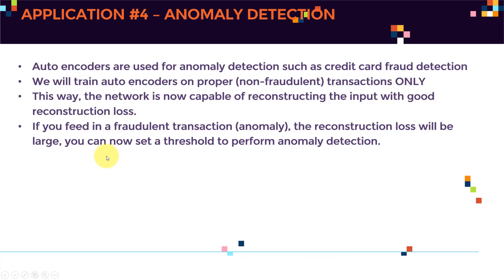When a fraudulent or anomaly transaction is fed in, the reconstruction loss will be large, allowing the autoencoder to detect anomalies. Please enjoy TensorFlow 2.0 Practical Advanced, and I'll see you guys in the next lecture.